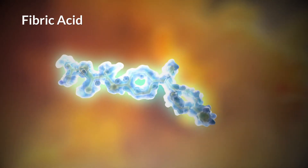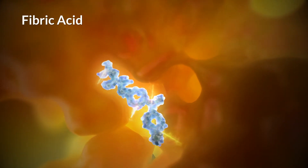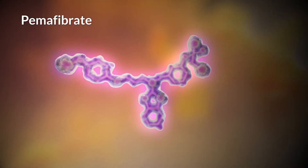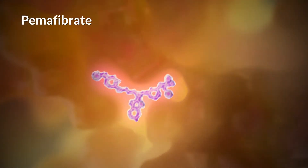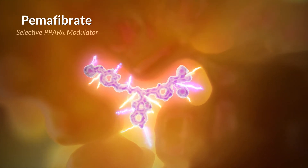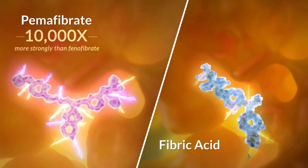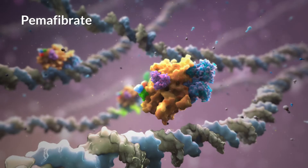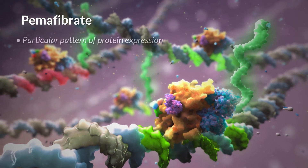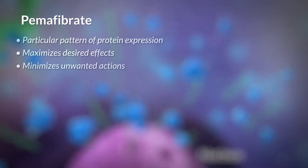The classic PPAR-alpha agonist, fibric acid, has a linear structure when bound to the receptor's cleft. Screening of over 1,300 new compounds identified pemifibrate, a Y-shaped molecule that binds this cleft differently. Pemifibrate acts as a selective PPAR-alpha modulator, or SPARM. Pemifibrate binds to PPAR-alpha 10,000 times more strongly than phenofibrate, and directs the assembly of a unique transcriptional complex that drives a particular pattern of protein expression, maximizing desired effects while minimizing unwanted actions.